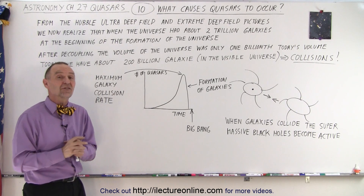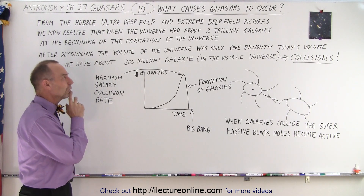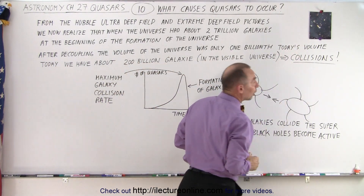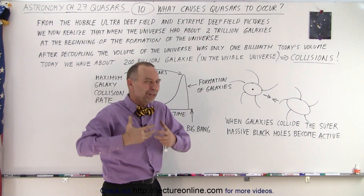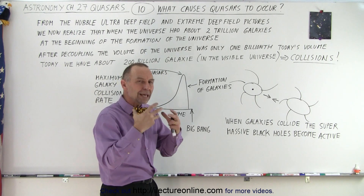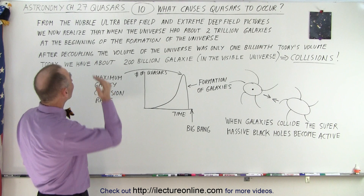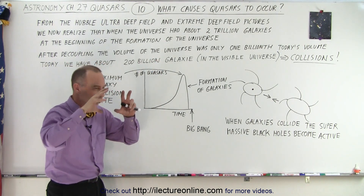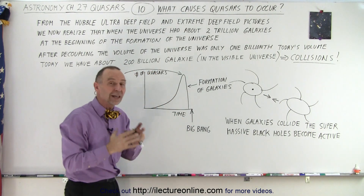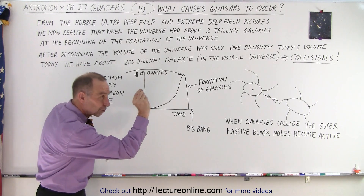Back then there were about two trillion galaxies in the universe. We know that because of the Hubble Space Telescope. The first big picture was called the Hubble Deep Field, which made us realize there were over 100 billion galaxies today. The count is now around 200 billion in the visible universe. But back then there were far more — smaller galaxies. We know that from the Ultra Deep Field and Extreme Deep Field images, looking as far back in time as possible. Each picture contained well over 10,000 galaxies in a small spot in space, and averaging that out revealed about two trillion galaxies.